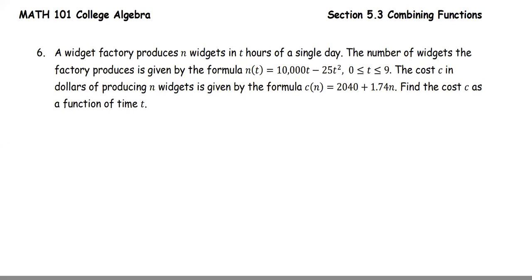In this example, a widget factory produces n widgets in t hours of a single day. The number of widgets the factory produces is given by the formula n(t) = 10,000t - 25t², where 0 ≤ t ≤ 9. The cost c in dollars of producing n widgets is given by the formula c(n) = 2040 + 1.74n. Find the cost c as a function of time t.